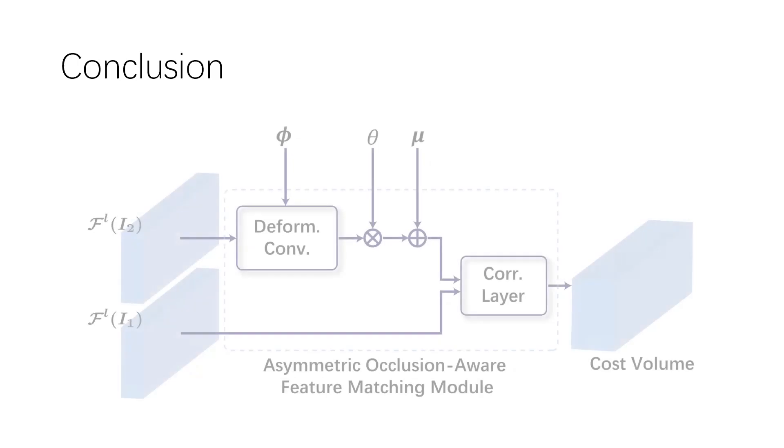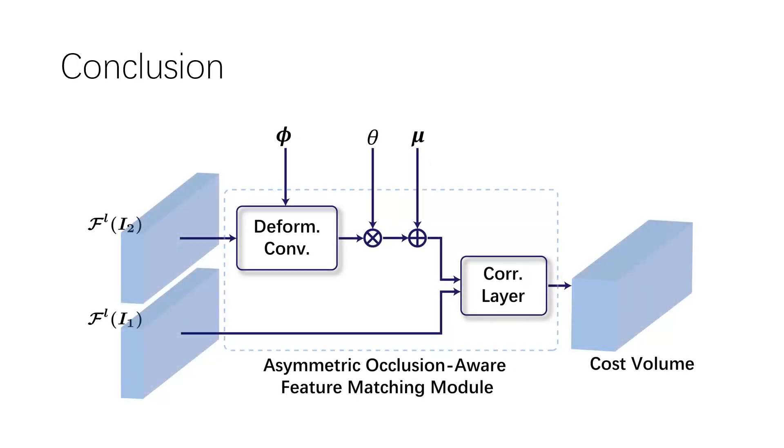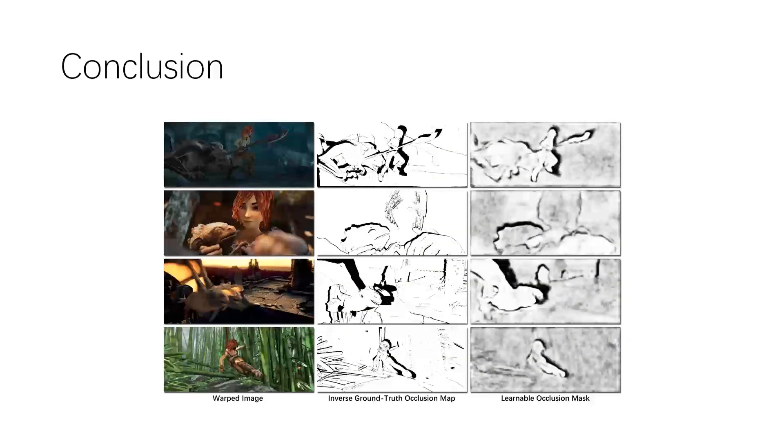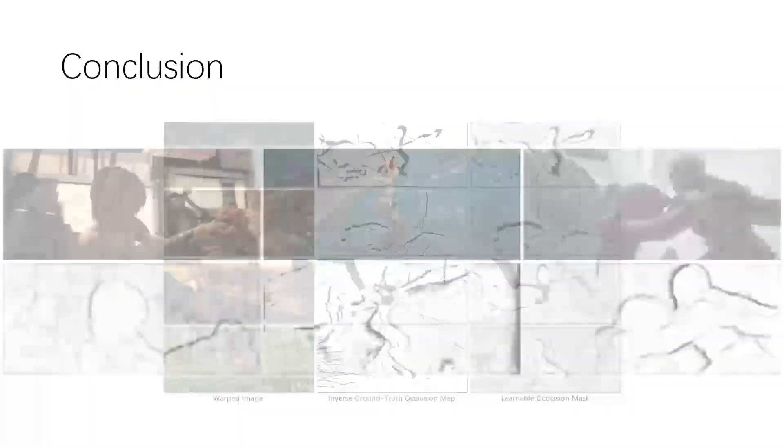In conclusion, we propose the asymmetric occlusion-aware feature matching module, which incorporates a learnable occlusion mask without any explicit supervision and can be easily integrated into end-to-end network architectures while introducing negligible computational cost.